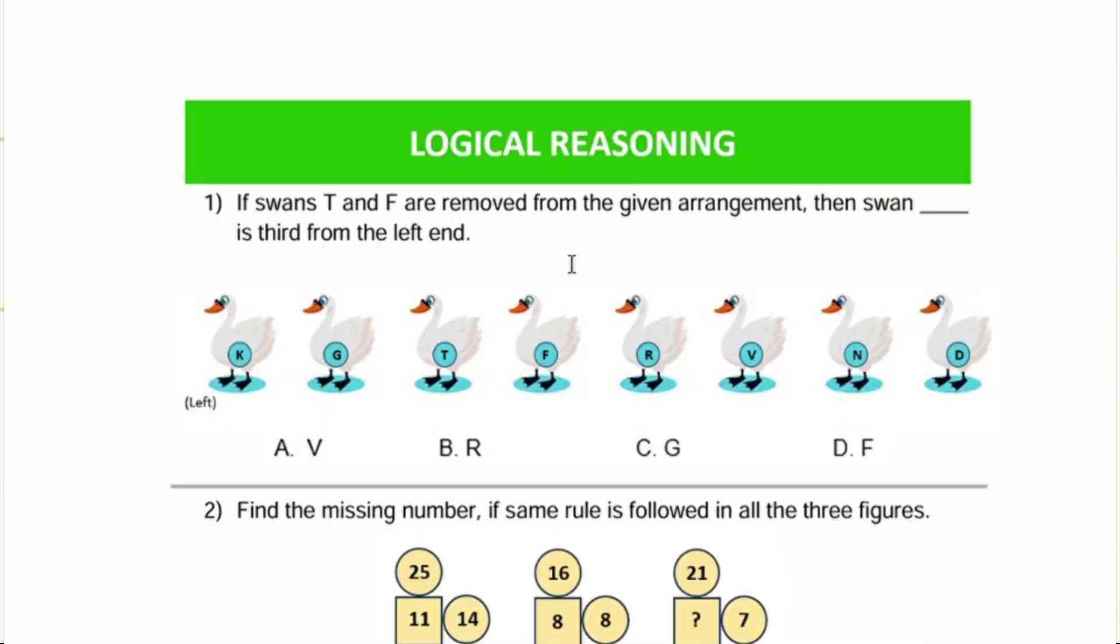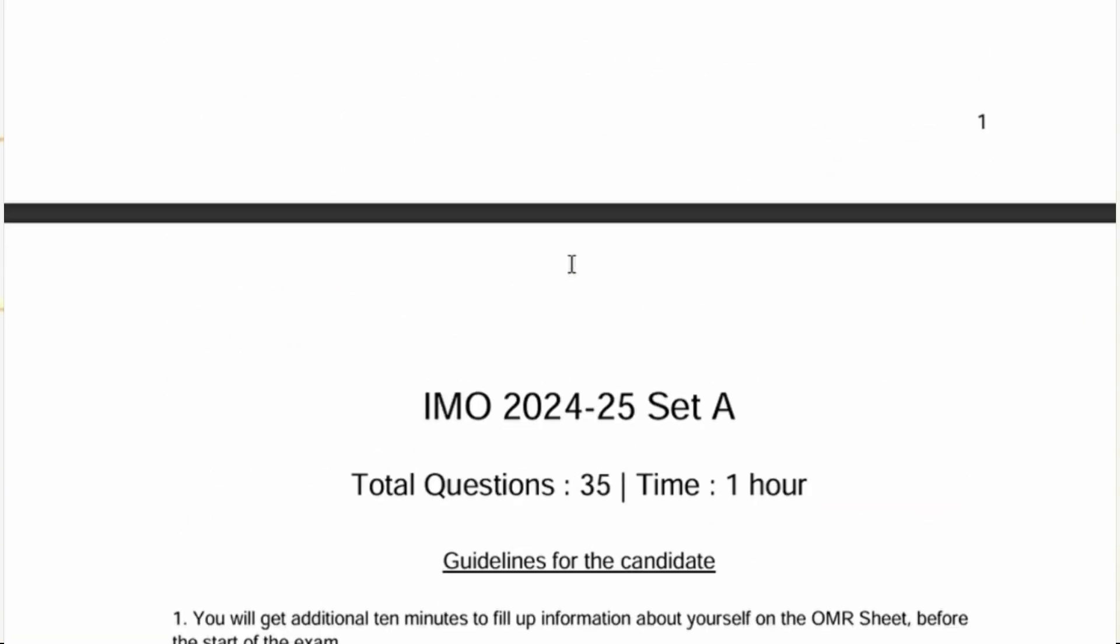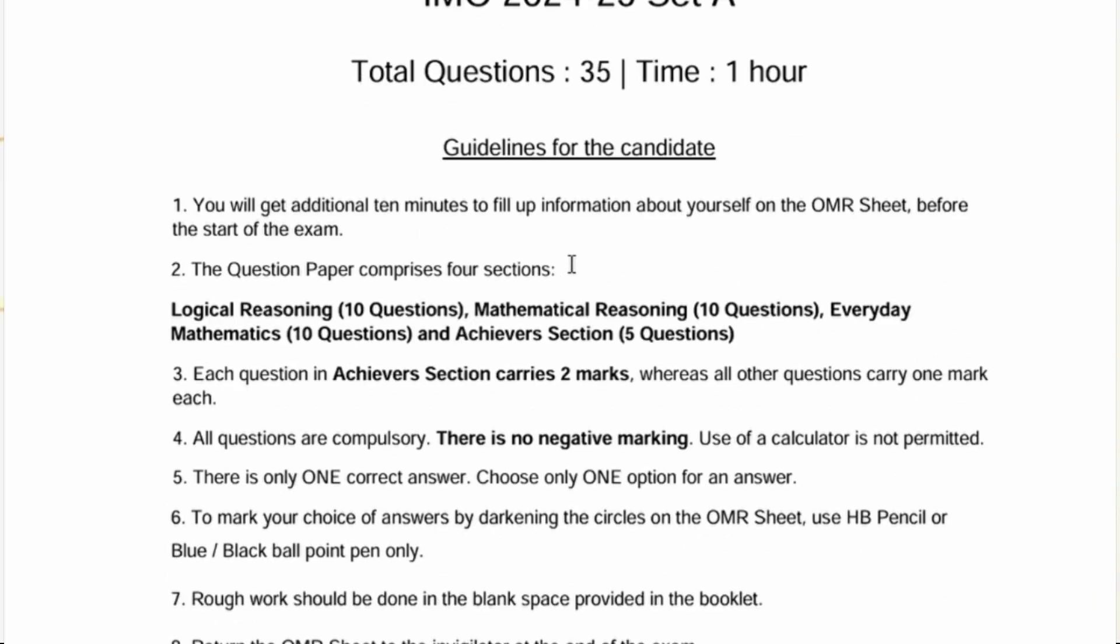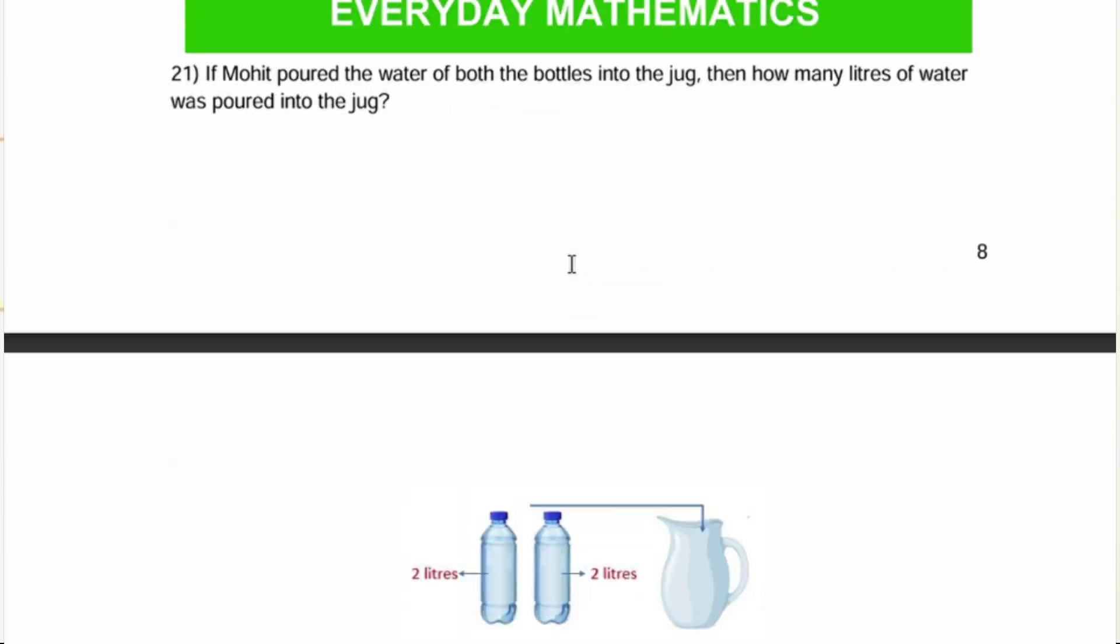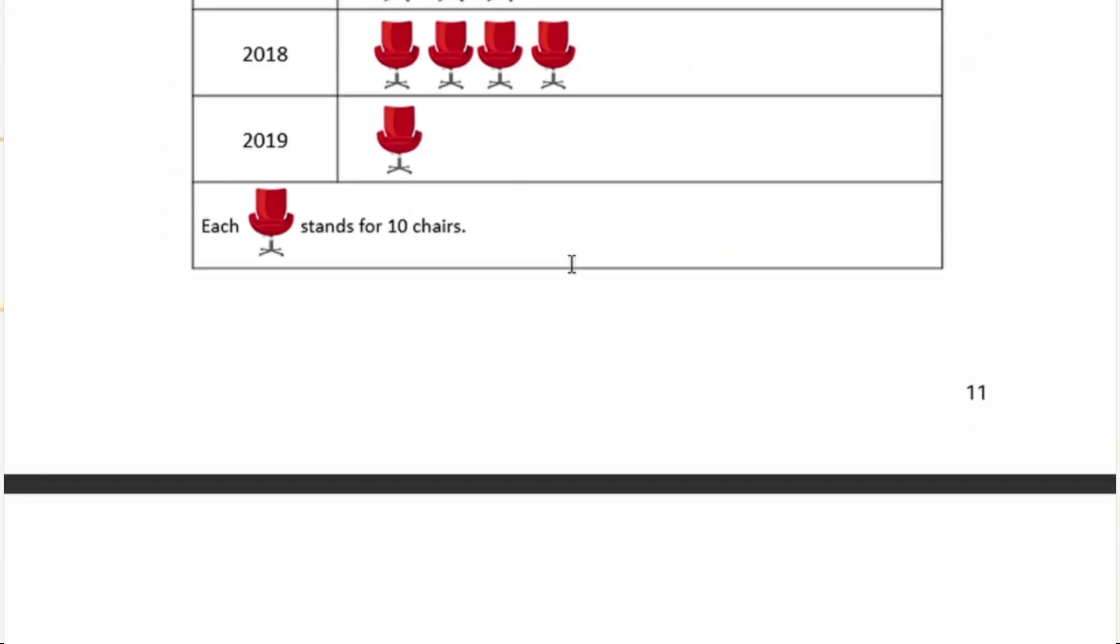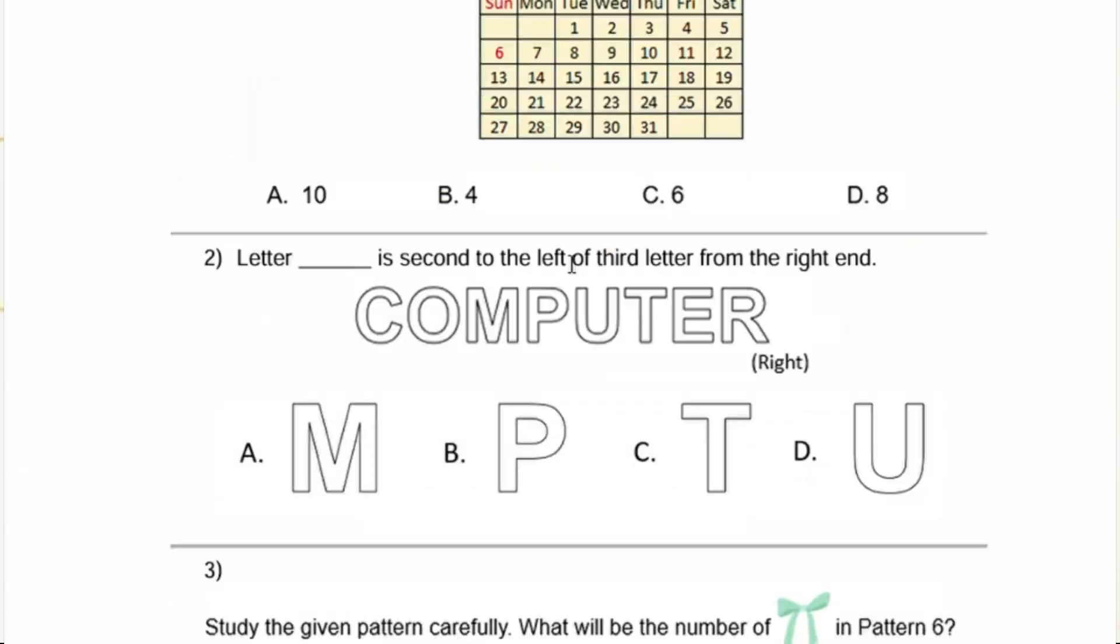Dear parents, if you want your child to ace the Olympiad examination, you need to get them to practice a lot of previous year questions. If you want to purchase 18 previous year questions, you can go to the link in the description box where you will be able to purchase them for just rupees 89. Now back to the video.